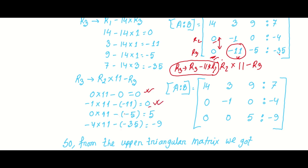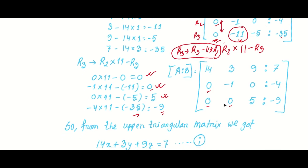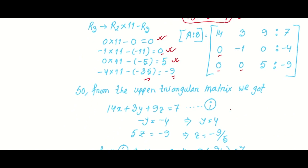We can now see the upper triangular matrix is formed with zeros below the diagonal. We convert back to equations. From the first row: 14x plus 4y plus 9z is equal to 7, which is the constant value.